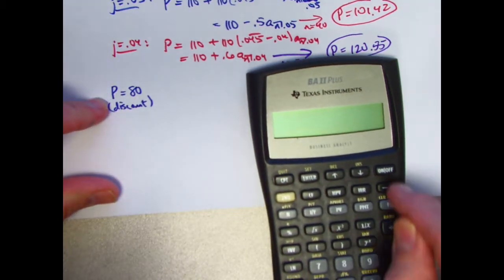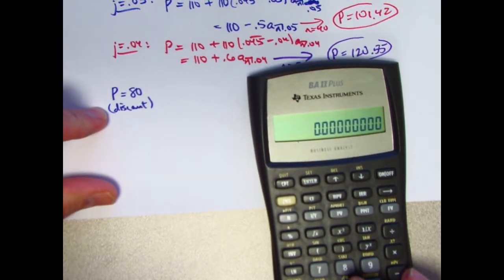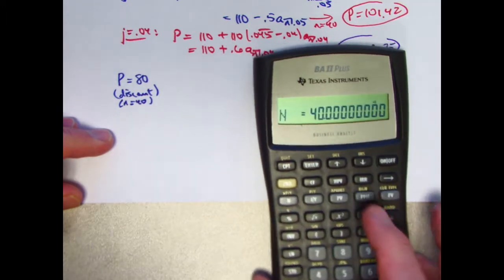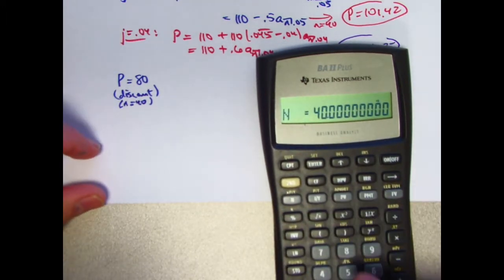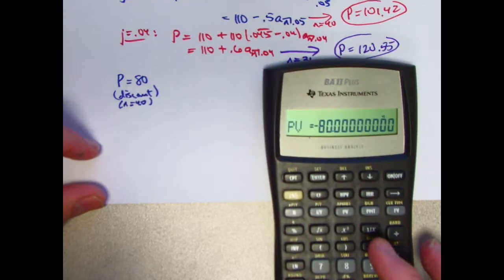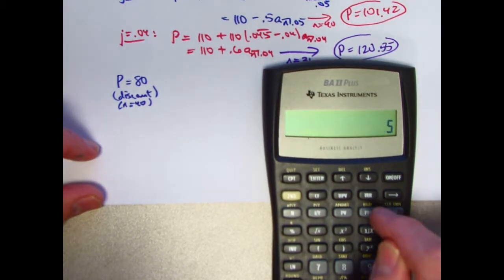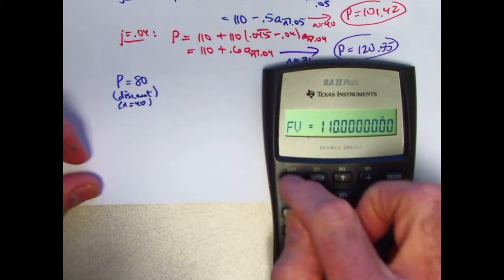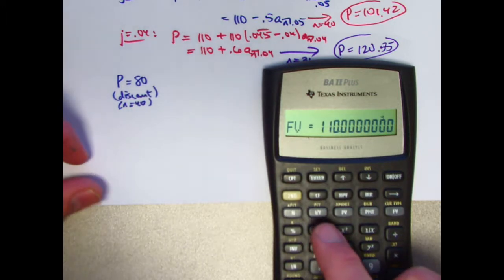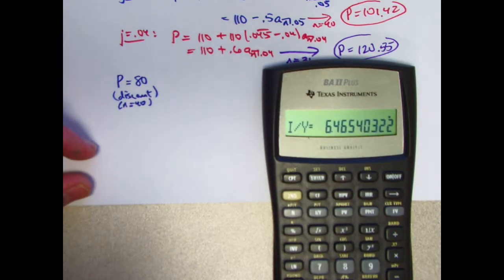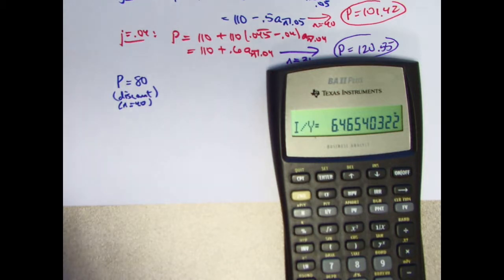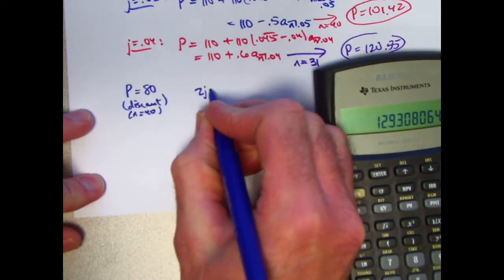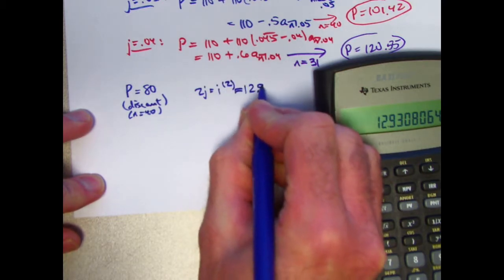We buy the price to be 80. We're buying at a discount, and that means the latest possible date. N is 40. So plug in 40 into N. Plug in negative 80 into PV. That's outgoing money. The coupons are still 5, just like they were before. 5 goes into PMT. And the redemption amount is 110. 110 goes into FV. Now compute CPT. I slash Y. Interest per year, but it's really interest per half year in this case. I get 6.465%. That's the effective semi-annual yield. You need to double that to get the nominal annual yield. 2J, which you might call I2, is about 12.93% in the first case.